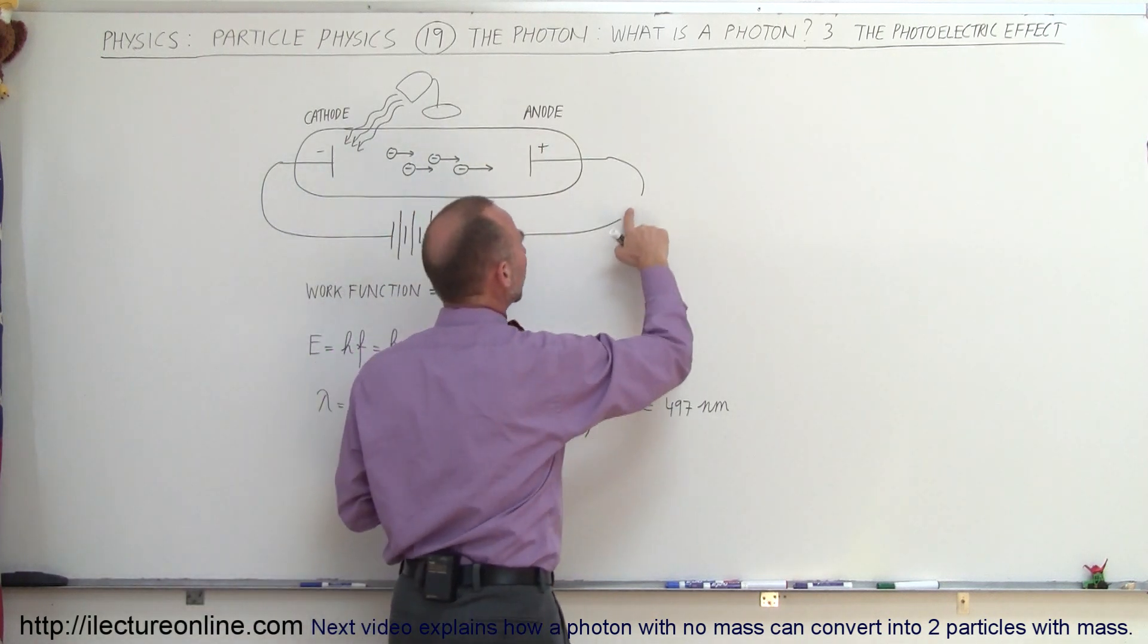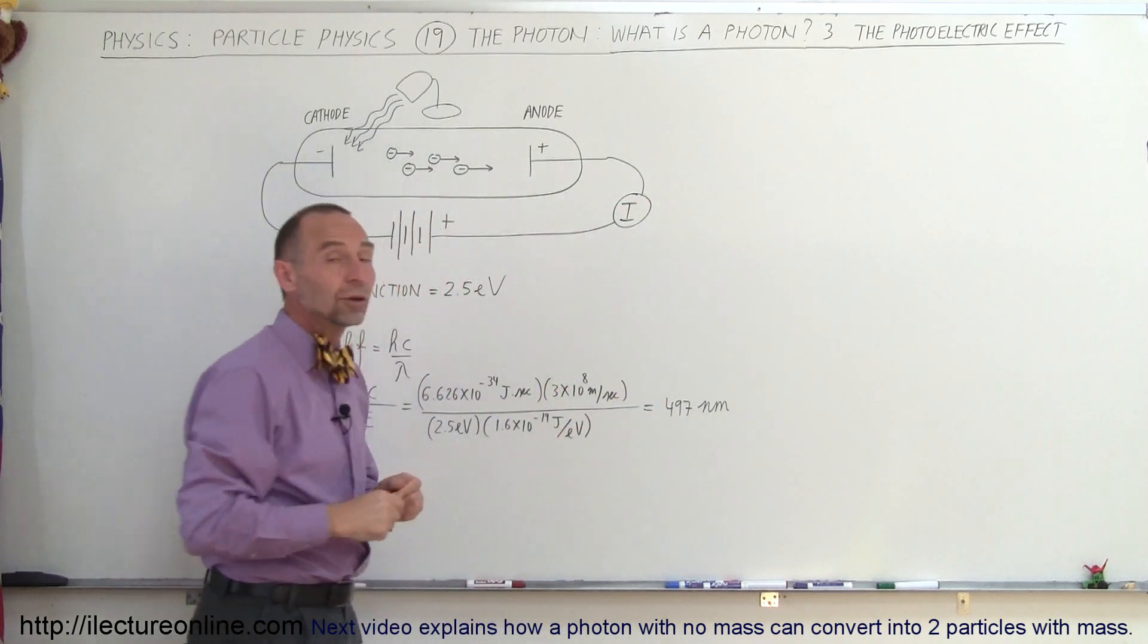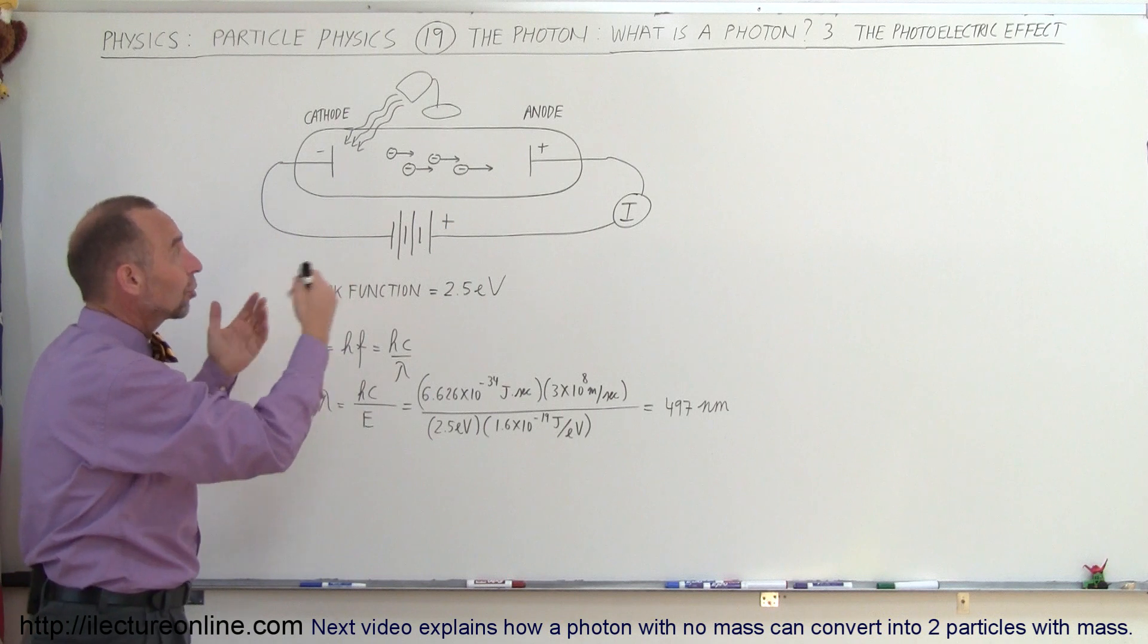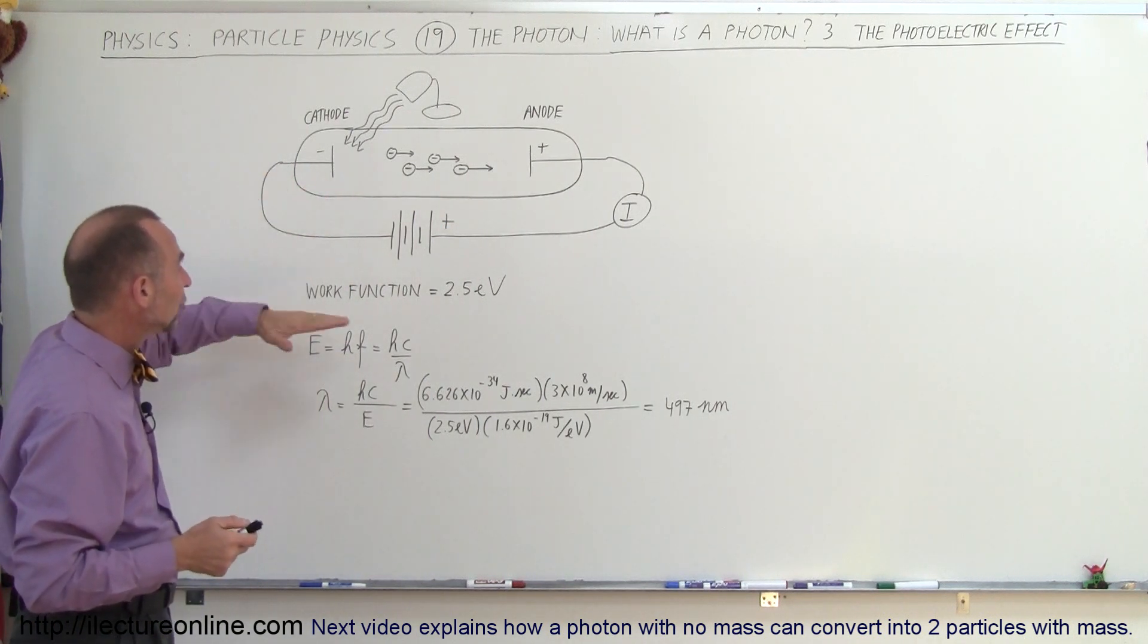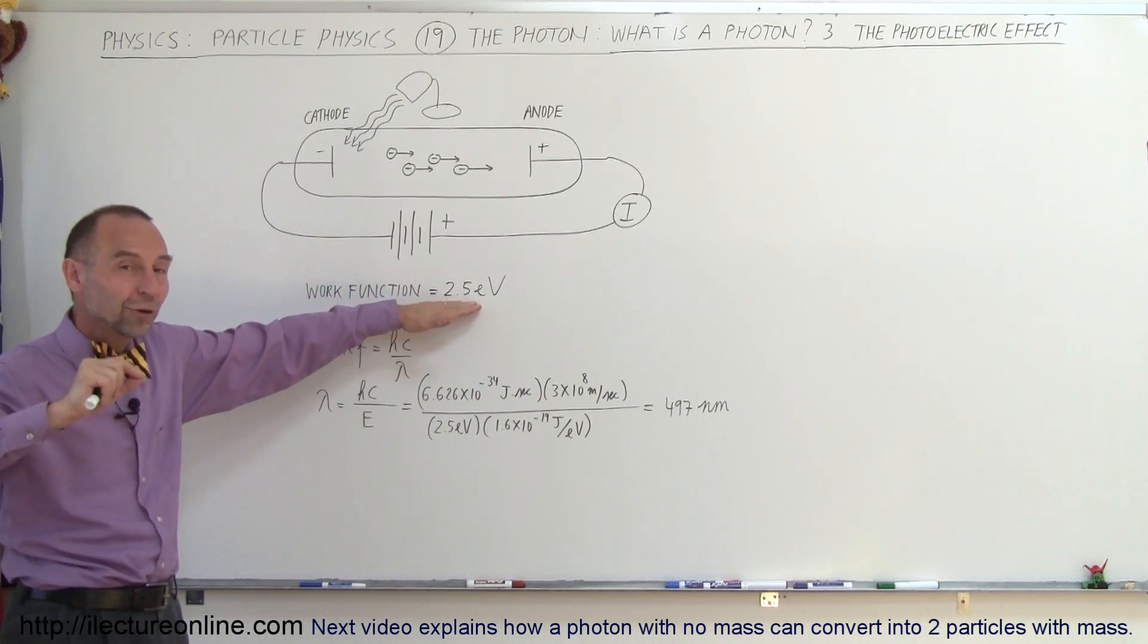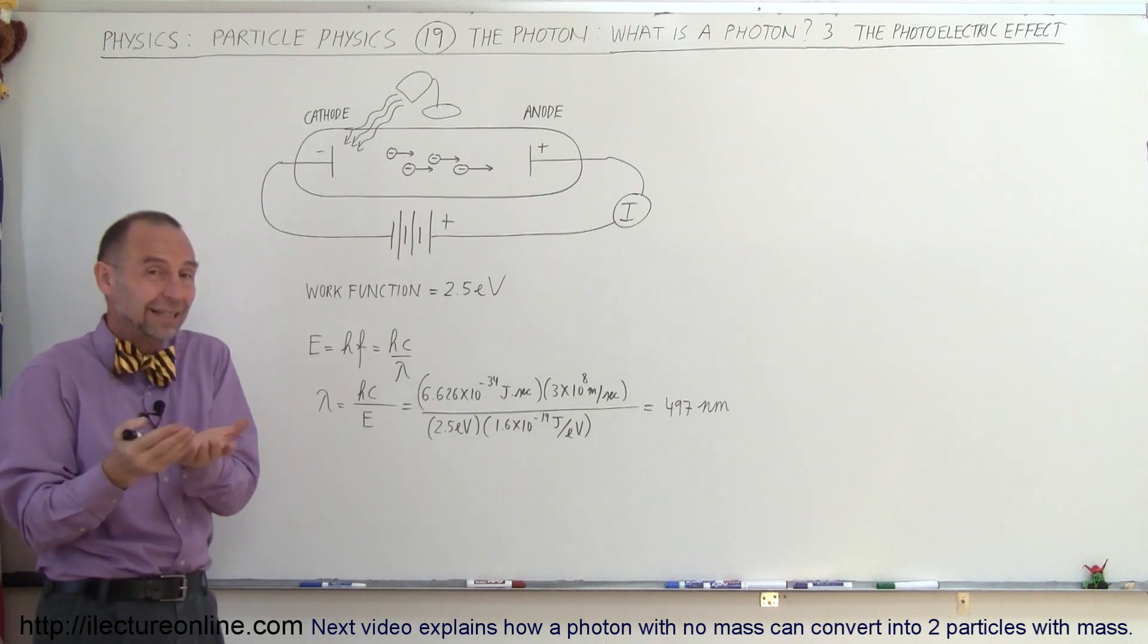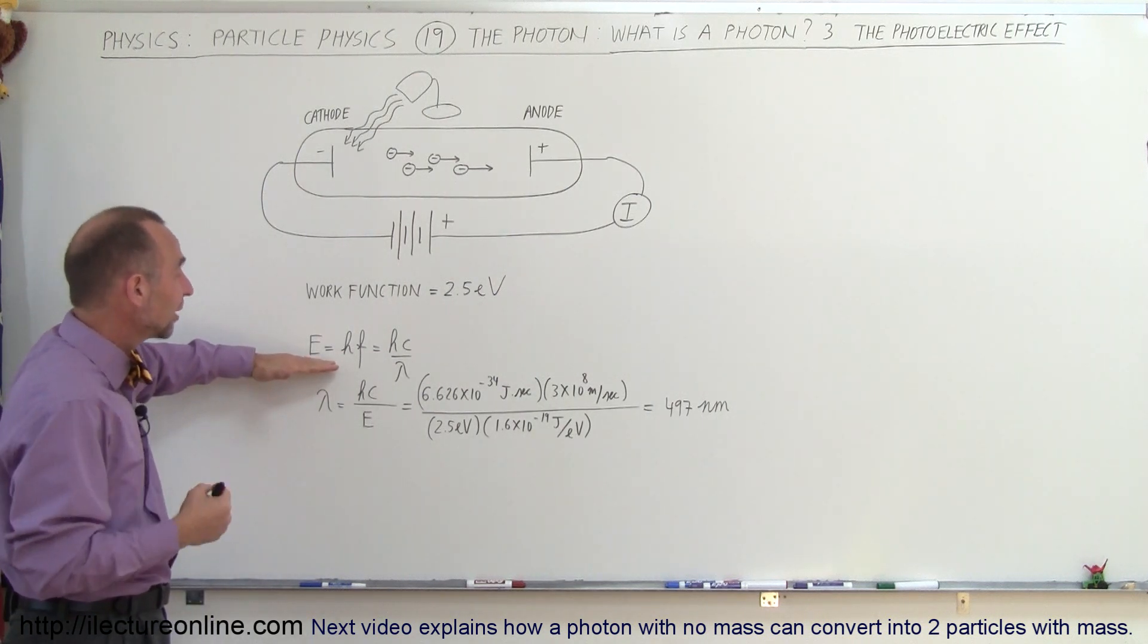And of course, if you would put a current meter in here, you can then notice how much current there was. But it turns out that the amount of energy that each electron requires being 2.5 electron volts, now that we know that photons are quantized, we can then calculate what the energy would have to be for each photon, which of course would be 2.5 electron volts,